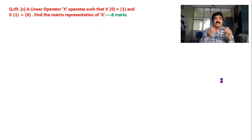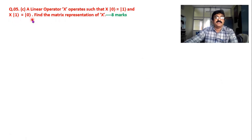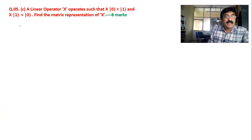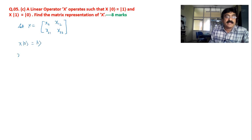Now coming to the numerical problem: a linear operator X operates such that X on ket zero gives ket one and X on ket one gives ket zero. Find the matrix representation of X. Let X be a two-by-two matrix with elements X11, X12, X21, X22.